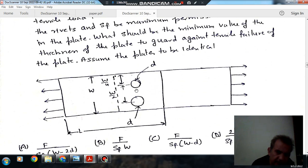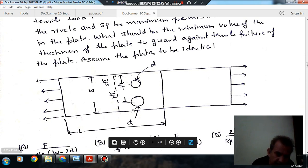So these are the two plates and these are joined by two rivets. These are W by 4, these are W by 2. The whole width is W and the diameter of the rivet is D. And L is length of plate.